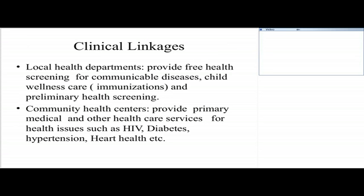My presentation today is talking about community and clinical linkages. Most of the work that we've done in the last 15 years is working with individuals with chronic clinical diseases, mainly individuals who are HIV positive, and we have a system with linkages for other issues they may have, such as diabetes and hypertension. When we talk about clinical linkages, we're talking about the local health department that we work very closely with in Northern Virginia, which provides free health screening for community disease, child wellness, immunization, and preliminary health screening. We also work with community health centers — federally qualified health centers — that provide the other part of health services that clients need.